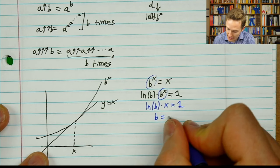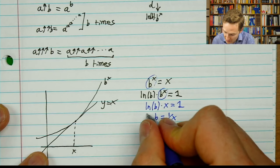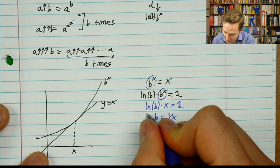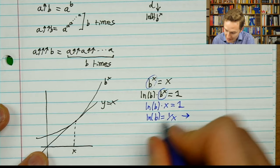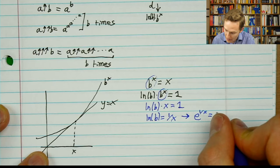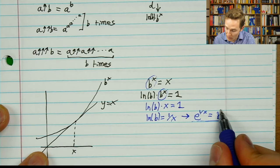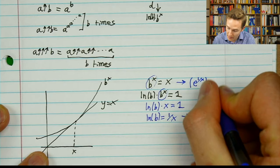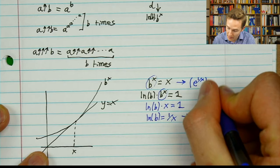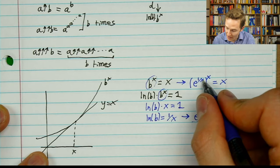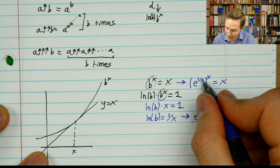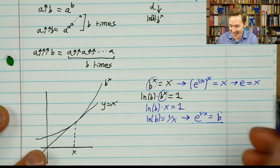Now for our puzzle — when is the graph tangent to y equals x? We know b to the x equals x at that point, and the slope ln(b) times b to the x equals 1. I can simplify b to the x as x, giving ln(b) times x equals 1, which means ln(b) equals 1 over x, or equivalently b equals e to the 1 over x. That gives us an expression for b entirely in terms of x, so substituting into the top equation: e to the 1 over x, all to the power x, equals x. But e to the 1/x to the power x simplifies to simply e. So x equals e.